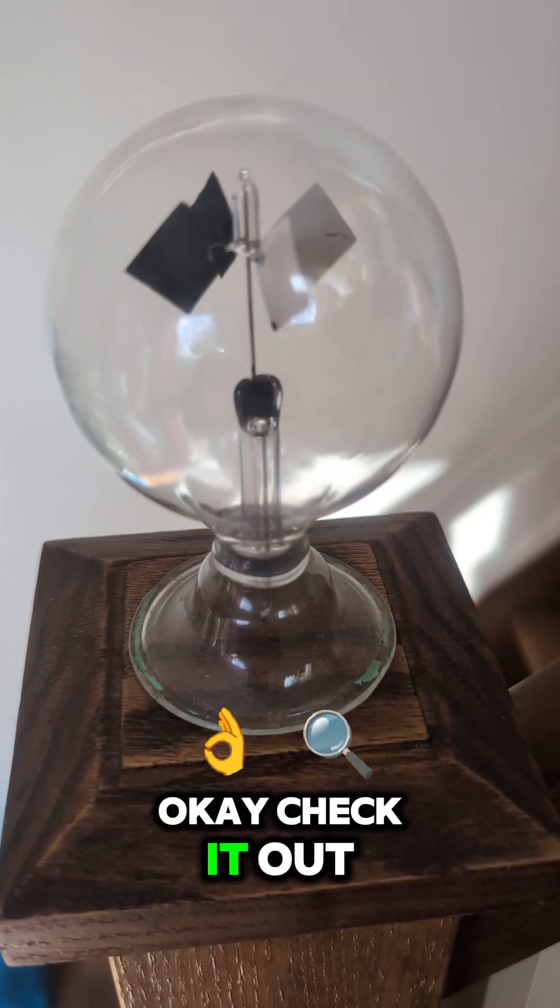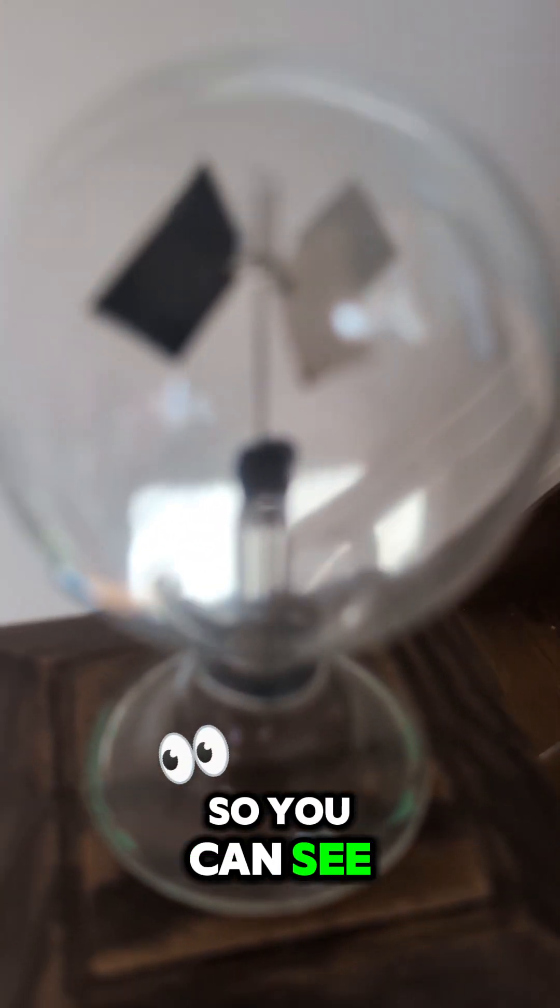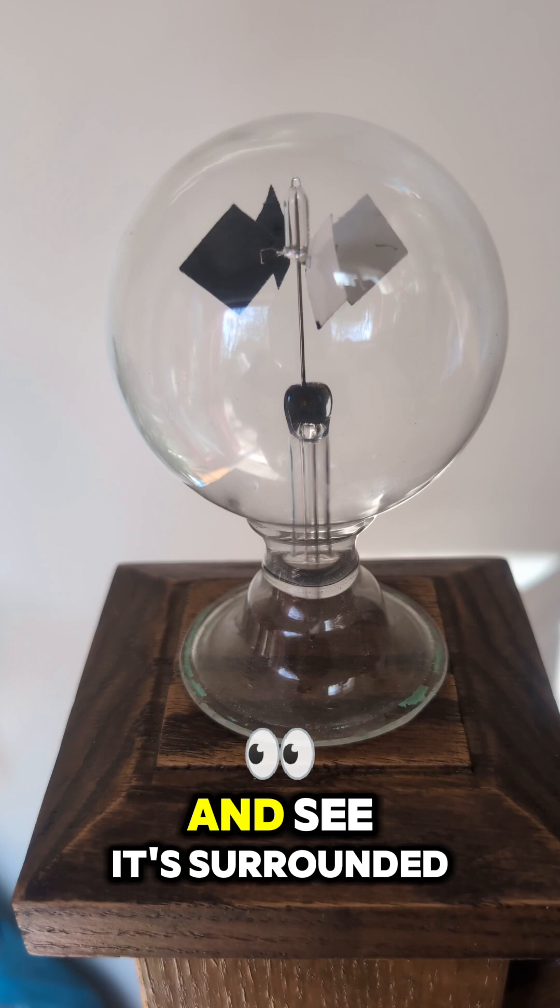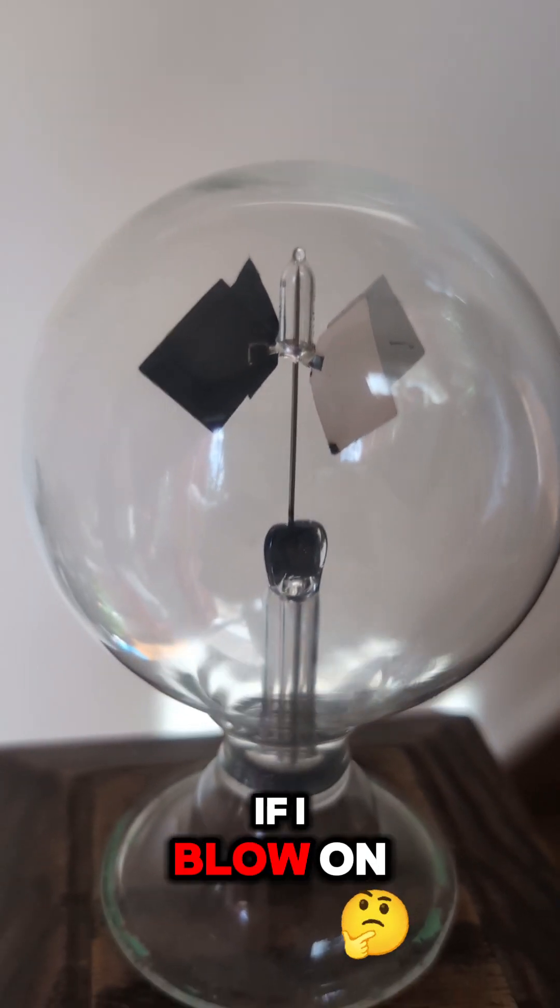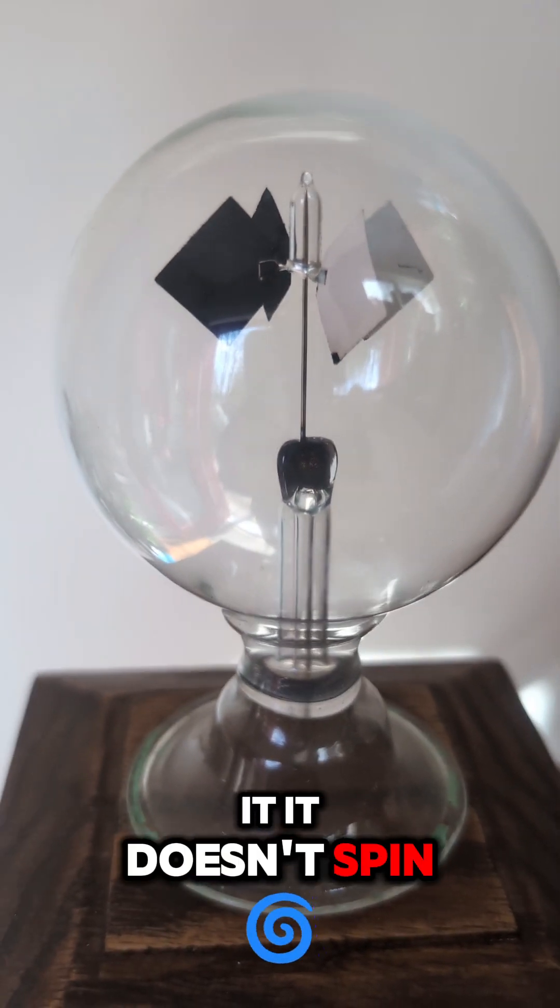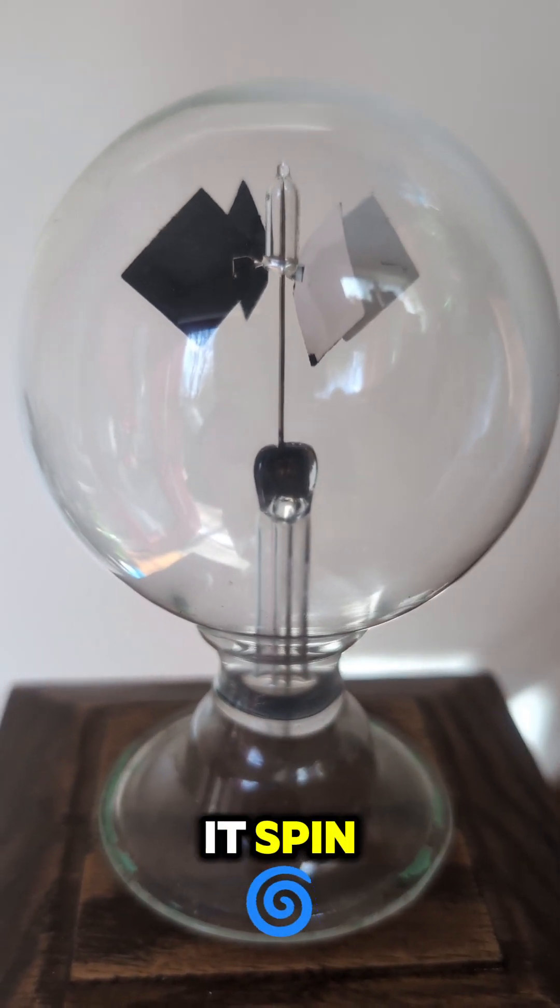Okay check it out. So you can see there's my Crookes radiometer. You can see it's surrounded by glass. There's nothing. If I blow on it, it doesn't spin. There's nothing to make it spin.